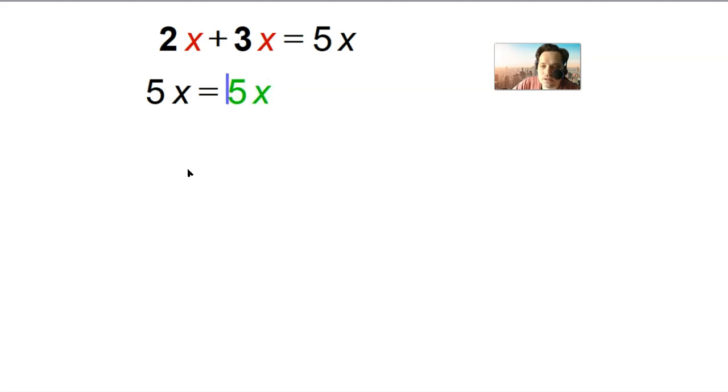But now something unusual happens. This is 5x and this is 5x also here. So you have 5x equals 5x. What does that mean? As an example, if x happens to have the value 1, you're going to have 5 times 1, that's just 5, but that's the same as 5 times 1 on the right side. They're both equal to 5.